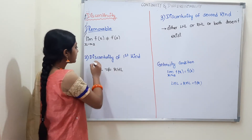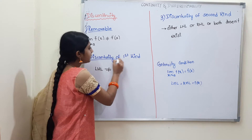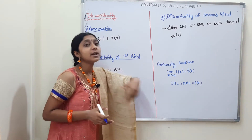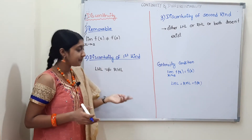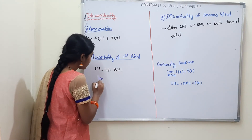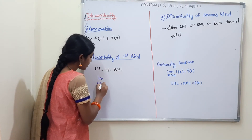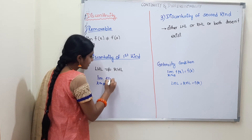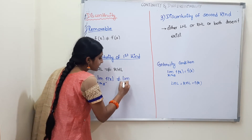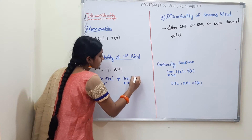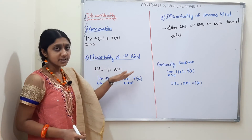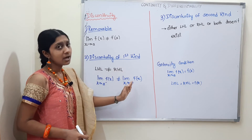Second one: Discontinuity of first kind. That means LHL is not equal to RHL — the limit of x tends to a minus f(x) is not equal to the limit of x tends to a plus f(x). This is discontinuity of first kind.